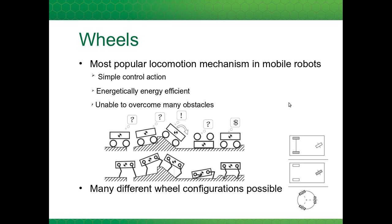Now we can look at why mobile robots often have wheels. It's simple to determine the control action needed for a wheel to get the desired motion of the robot, relative to say a legged robot. Also, wheels are energetically efficient — only friction needs to be overcome. However, wheels are unable to overcome any obstacles, so they have a limited application range. There are many different wheel configurations possible and we'll look at some different types.